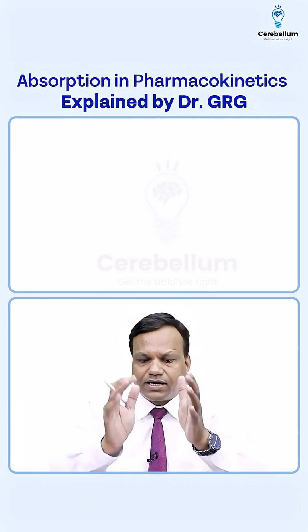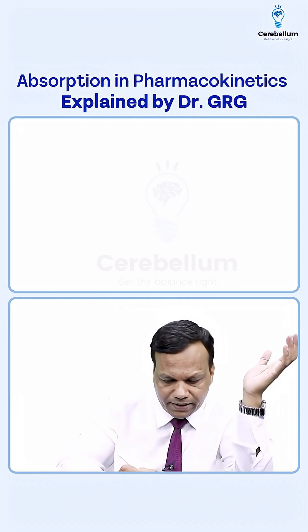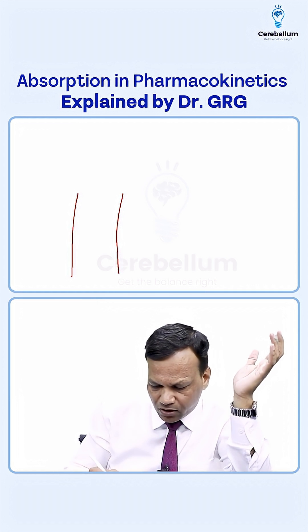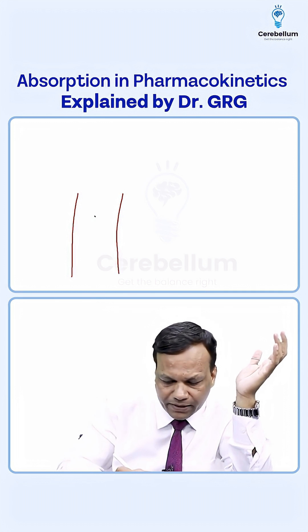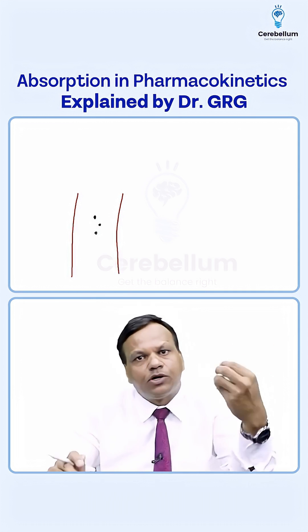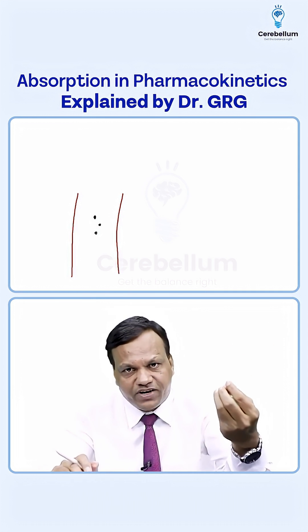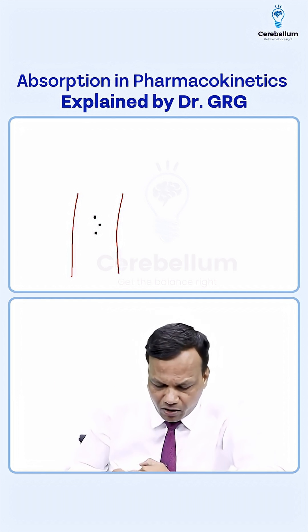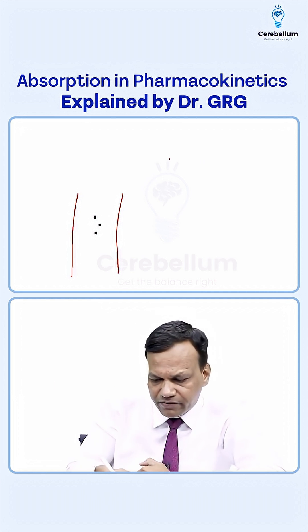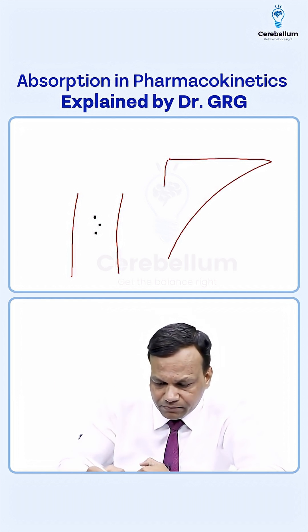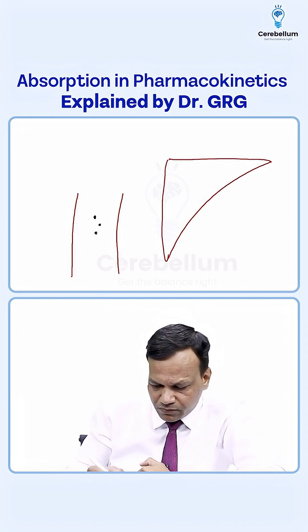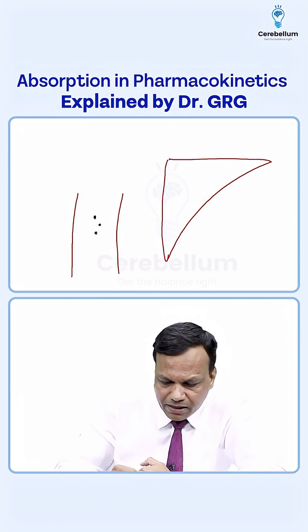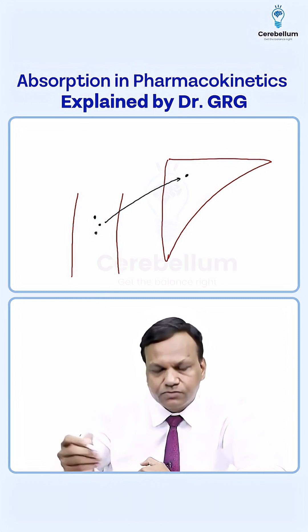After absorption, the drug has come to blood — this is systemic circulation. Now, what happened to the drug? Whether it stays in the blood or goes to different organs like liver, kidney, heart, brain. So, the drug may stay in the blood and the drug may enter different tissues.